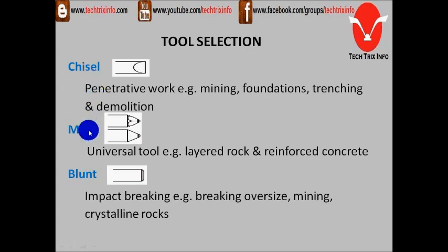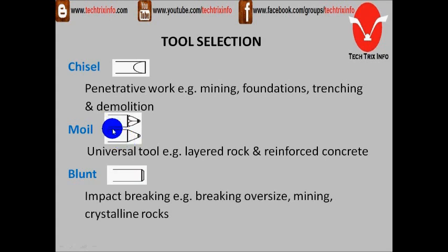The second one is the moil point. There are two types: one is the pyramidal type and there is another of the conical type. It's a universal tool and it's used for breaking layered rocks and reinforced concretes.